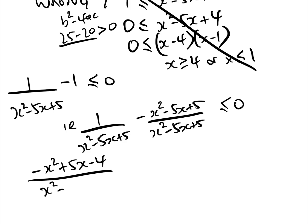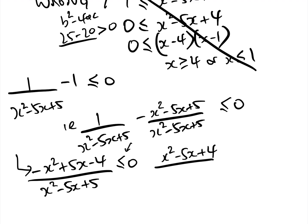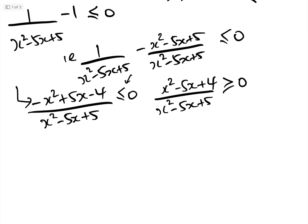Multiplying the numerator by −1 — because we don't want to deal with −x² — means we must flip the inequality, giving: (x² − 5x + 4) / (x² − 5x + 5) ≥ 0. Factorizing the top and bottom gives (x − 4)(x − 1) on the numerator.